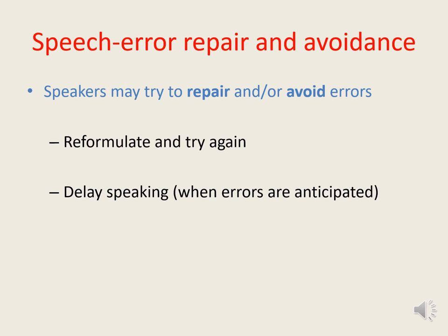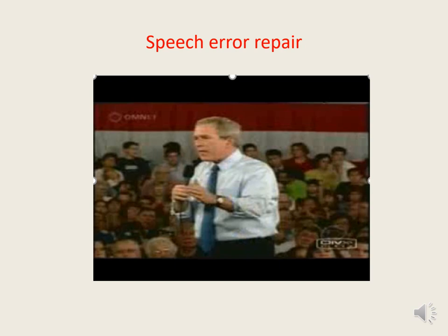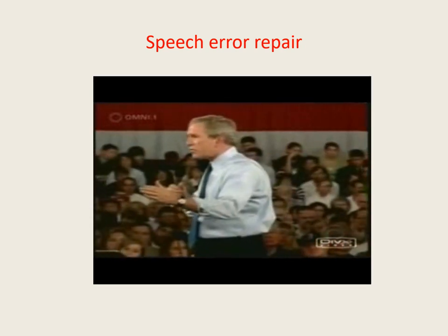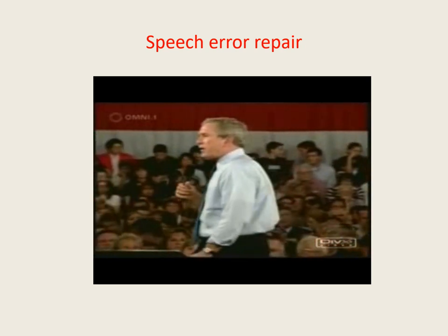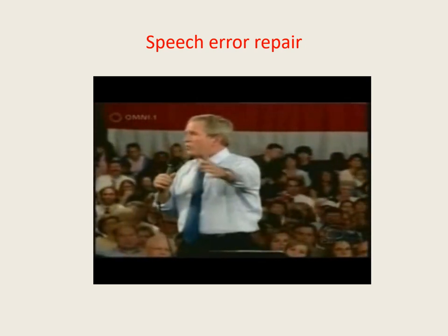The types of disfluency that result from error repair and error avoidance are somewhat different. Here's a recording of George Bush making and then repairing a speech error while talking about the Iraq War. Pay particular attention to the difference in fluency before and after he notices the speech error. Also, notice that the error itself is actually spoken completely fluently, so the error doesn't disrupt the flow of speech, whereas trying to correct it does. 'They want us to leave, that's what they want us to do. And I think the world would be better off if we did leave. If we didn't... if we left, the world would be worse.'